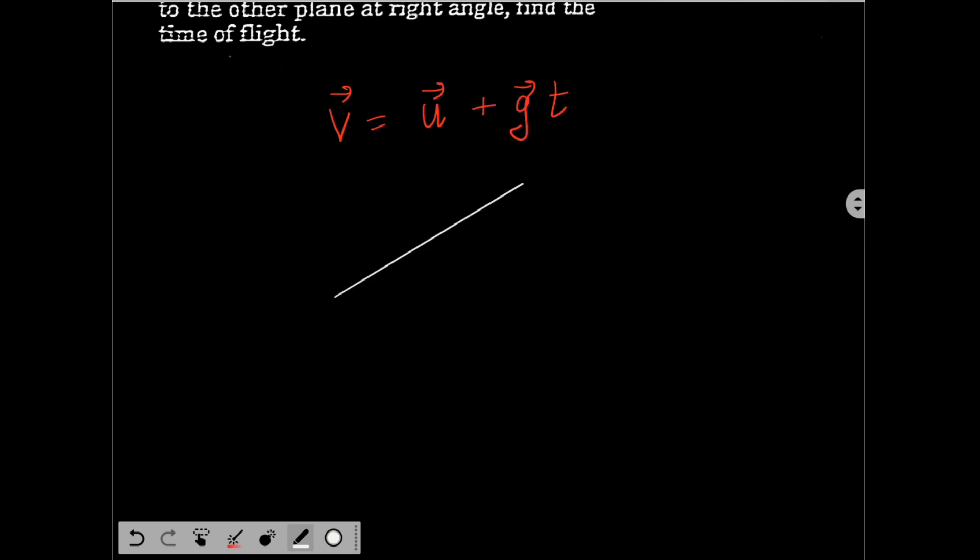Let's say this is my u vector, and then since acceleration due to gravity is downwards, this will be my g vector. g vector into t. u vector plus g vector t should give me v vector. So, this will be my v vector.